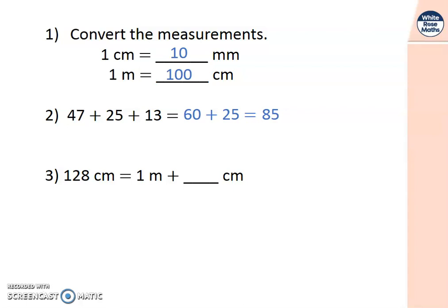And number three, 128 centimetres is equal to one metre and how many centimetres? One metre is the same as 100 centimetres. So it would be 100 centimetres and how many extra centimetres? 28. Well done. We'll use this skill today.